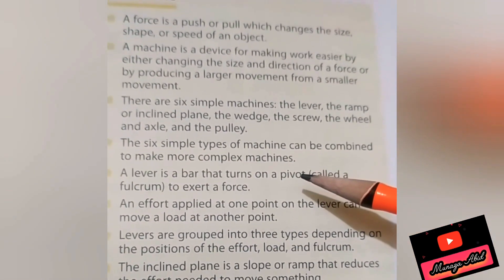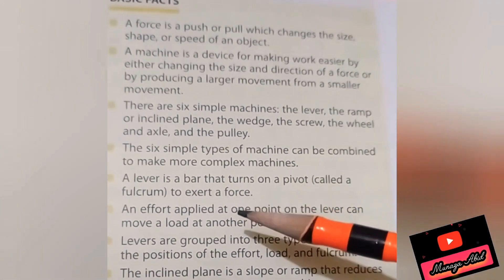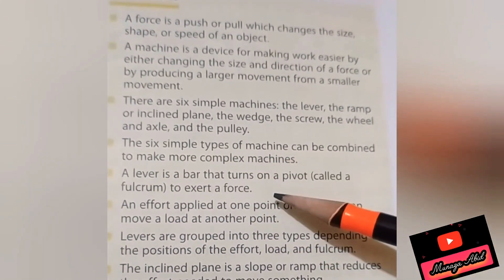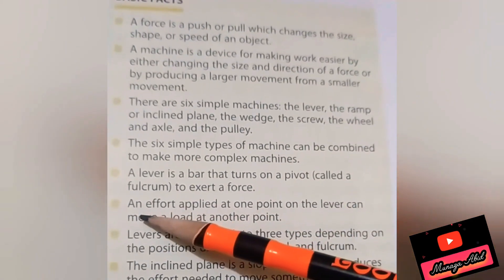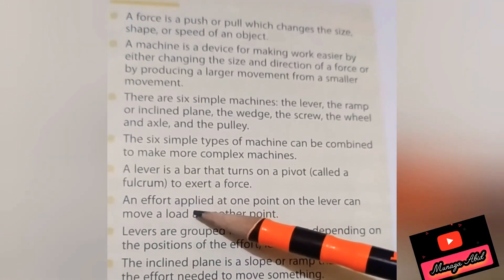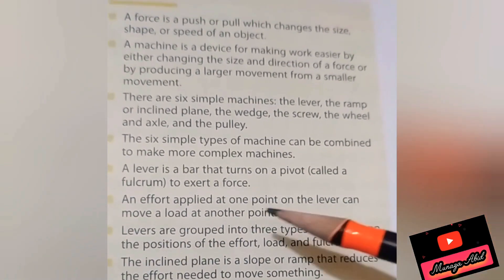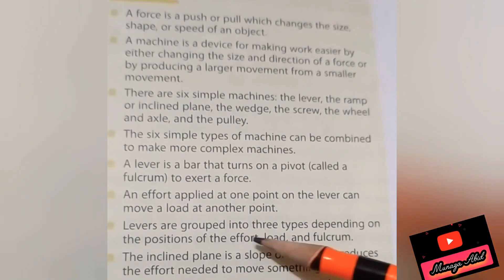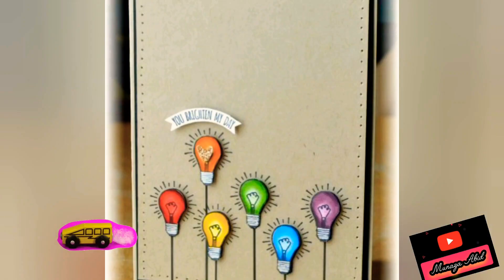Those were the four basic facts studied in lecture one. In this lecture, we focus on levers. A lever is a bar that turns on a pivot called a fulcrum to exert force. An effort applied at one point on the lever can move a load at another point. Levers are grouped into three types depending on the position of the effort, load, and fulcrum.